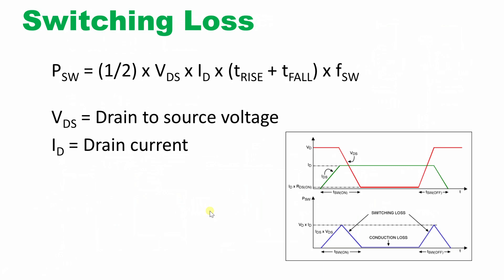Switching loss happens when the MOSFET transitions from off to on or on to off. In the ideal case the waveform is rectangular, but in the realistic case it ramps — it is not an exact rectangular pulse. When the MOSFET turns on, it does not turn on immediately; it takes some time — nanoseconds to turn on and also nanoseconds to turn off.